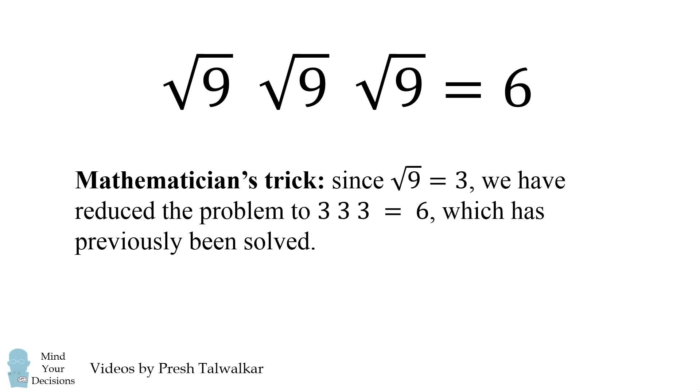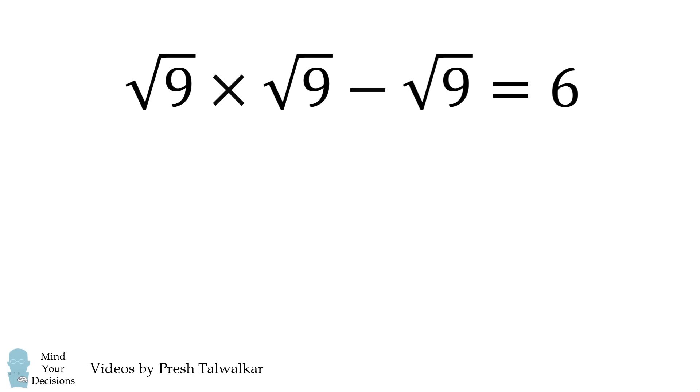So, any of our solutions for 3 3 3 is equal to 6 will also apply to this 9 9 9 once we've applied the square root to each of the 9's. So, we could solve this as the square root of 9 times the square root of 9 minus the square root of 9 that's equal to 6.